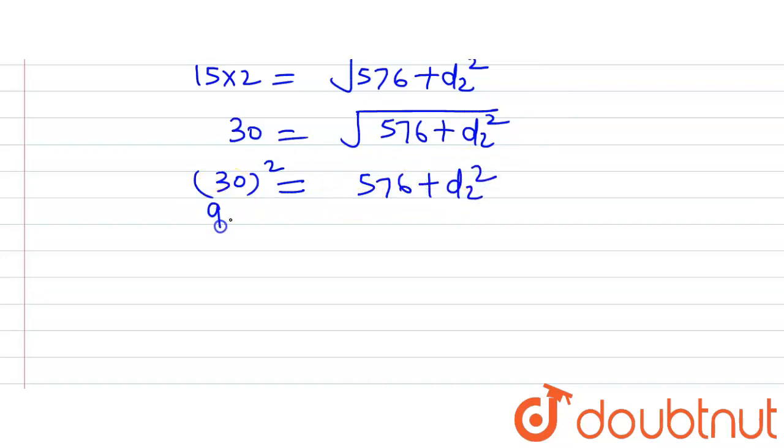Now 30 raised to the power 2 is 900. 576 will go to the other side of the equation and we will have 900 minus 576 equals D2 raised to the power 2. So 900 minus 576 equals 324 which equals D2 squared.